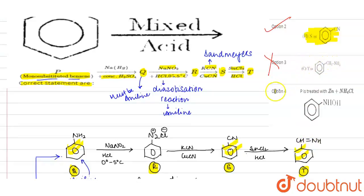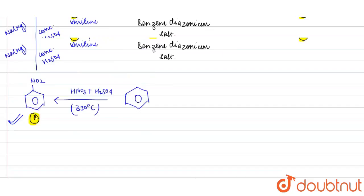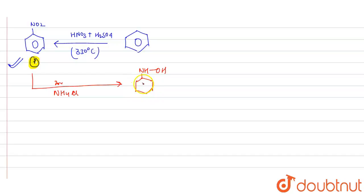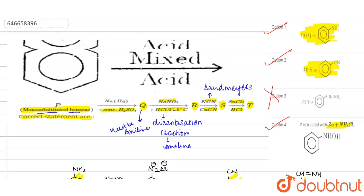Option 4 says P when treated with Zn dust plus NH₄Cl forms a hydroxylamine compound. This is also a correct statement, because when P (nitrobenzene) reacts with Zn dust in the presence of NH₄Cl, it forms the hydroxylamine compound (PhNHOH) over the benzene ring. So the correct statements are option 1, option 2, and option 4.